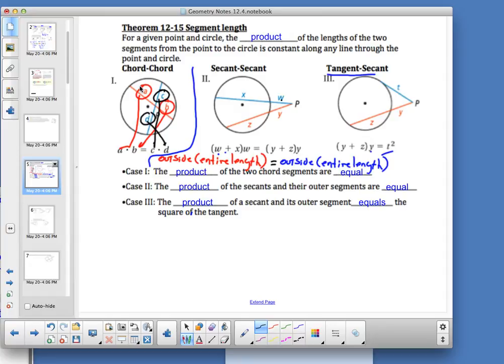W, outside the entire length. So if we do the outside value W times the entire length X plus W, we can relate that to the outside Y times the entire length Z plus Y.